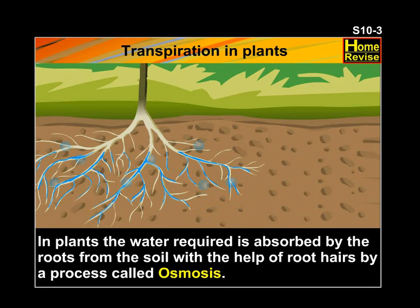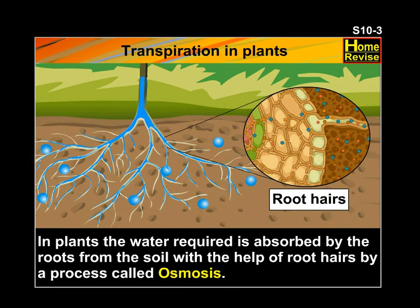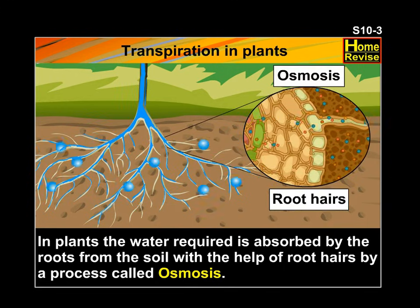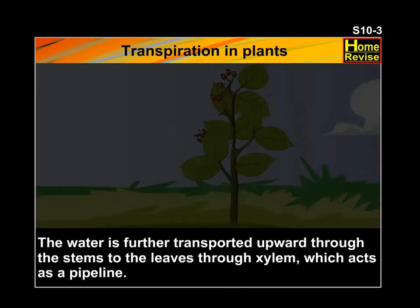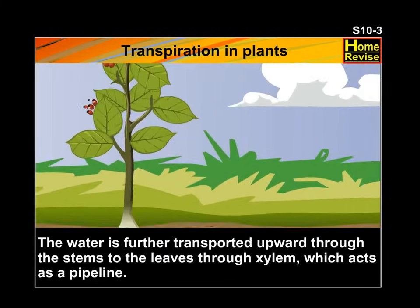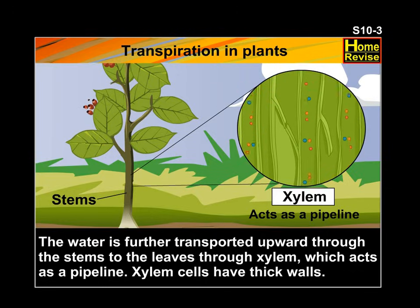In plants, the water required is absorbed by the roots from the soil with the help of root hairs by a process called osmosis. The water is further transported upwards through the stems to the leaves through xylem, which acts as a pipeline. Xylem cells have thick walls.